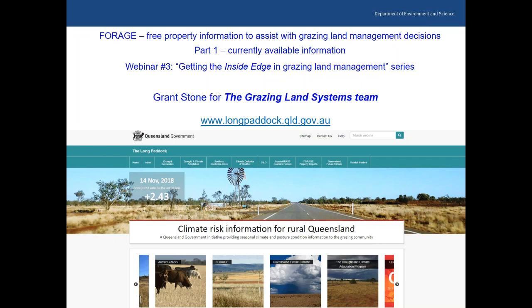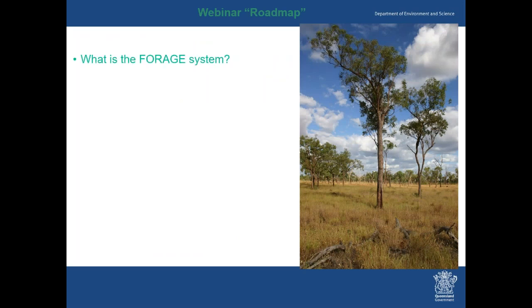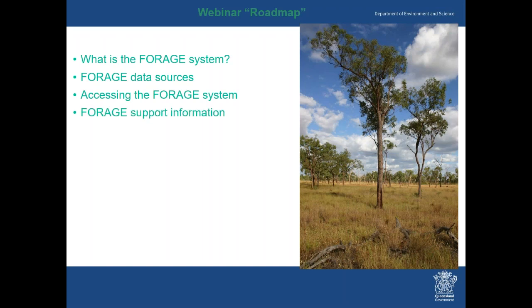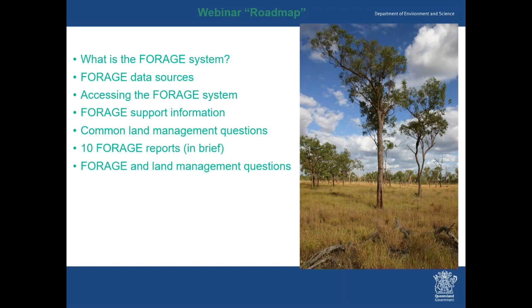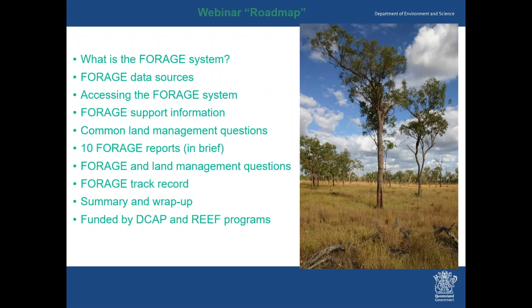Let's go through what we're going to talk about today in the webinar roadmap: what is the FORAGE system, our forage data sources and where they come from, how to access forage, what support information is available, then common land management questions, covering 10 of the forage reports, revisiting those questions with forage, a look at the forage track record, and a summary. This work is done from the Drought and Climate Adaptation Program and Reef programs, and we acknowledge their support.